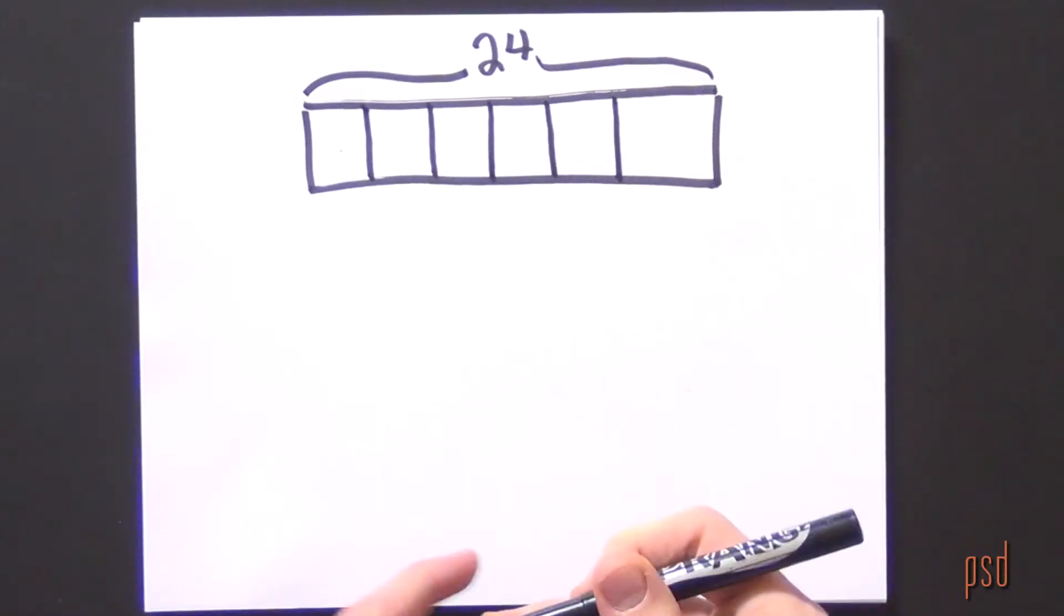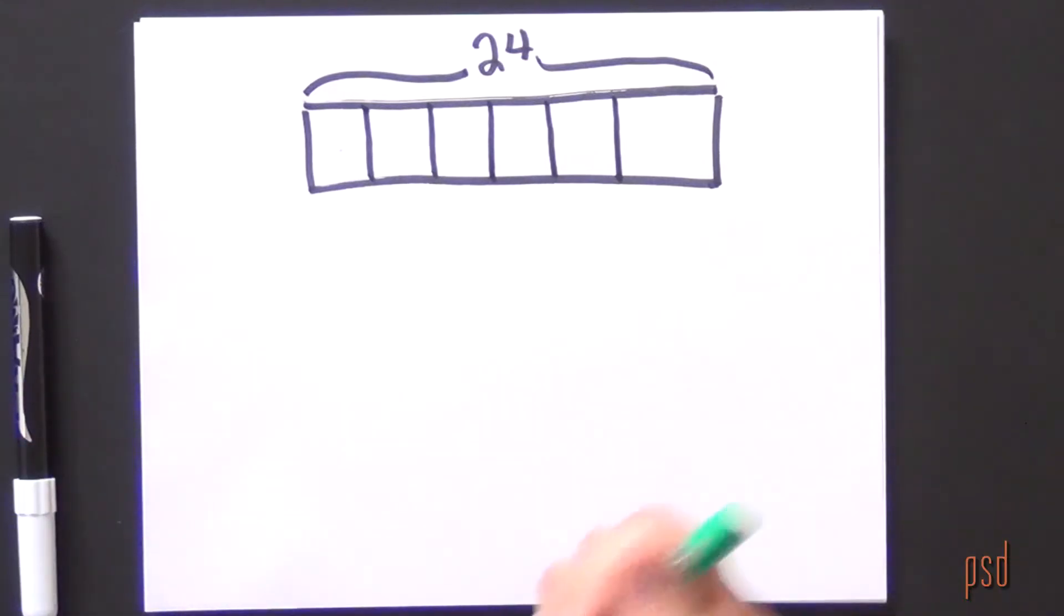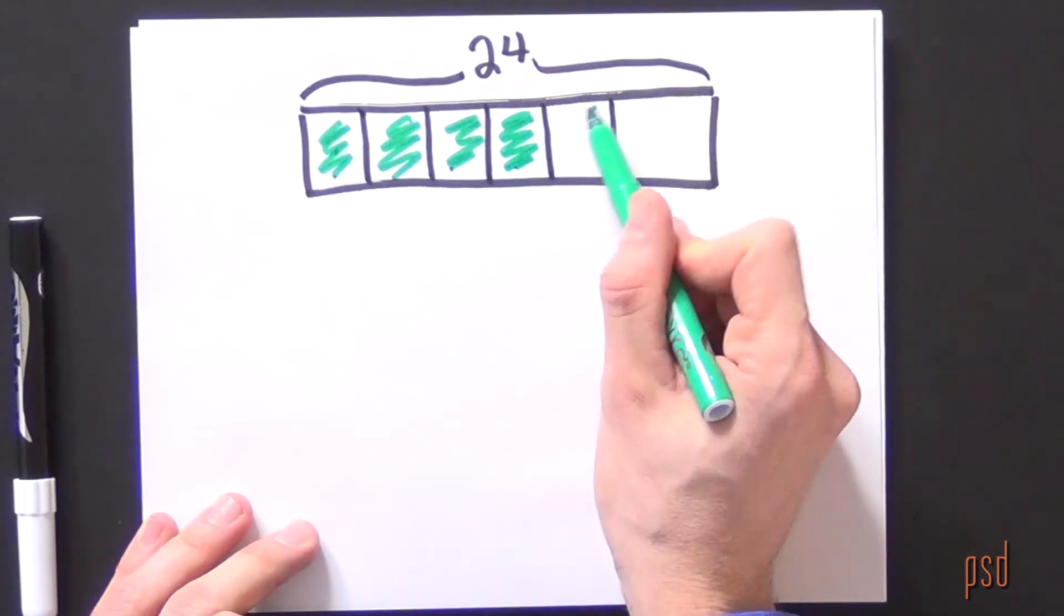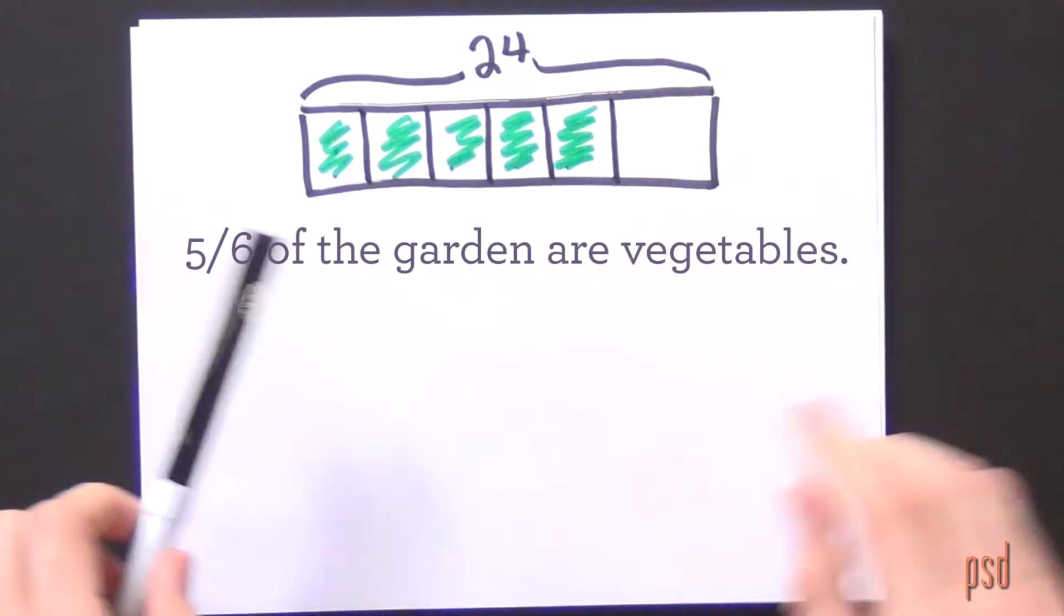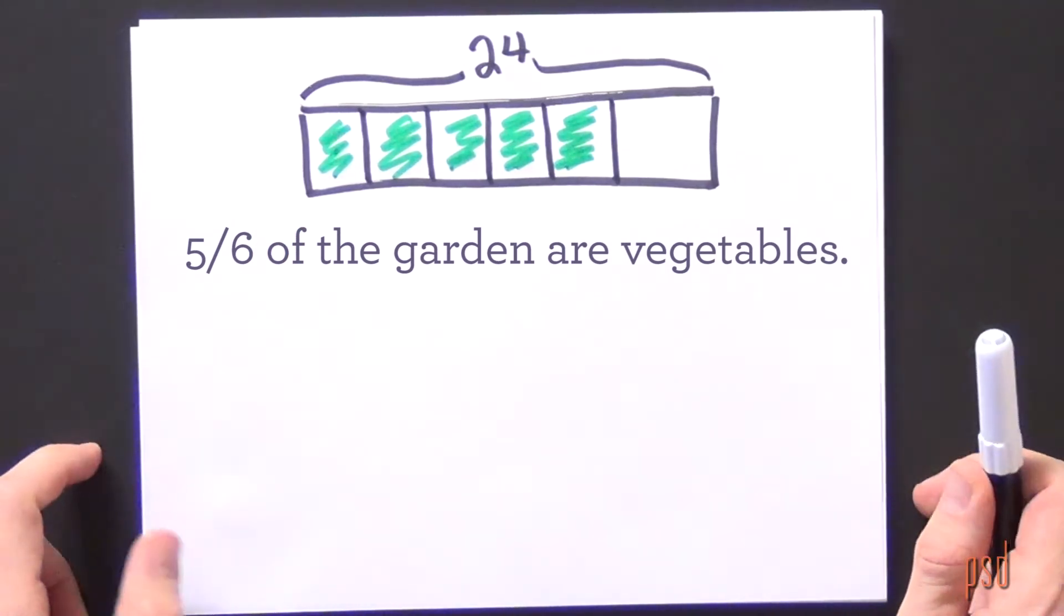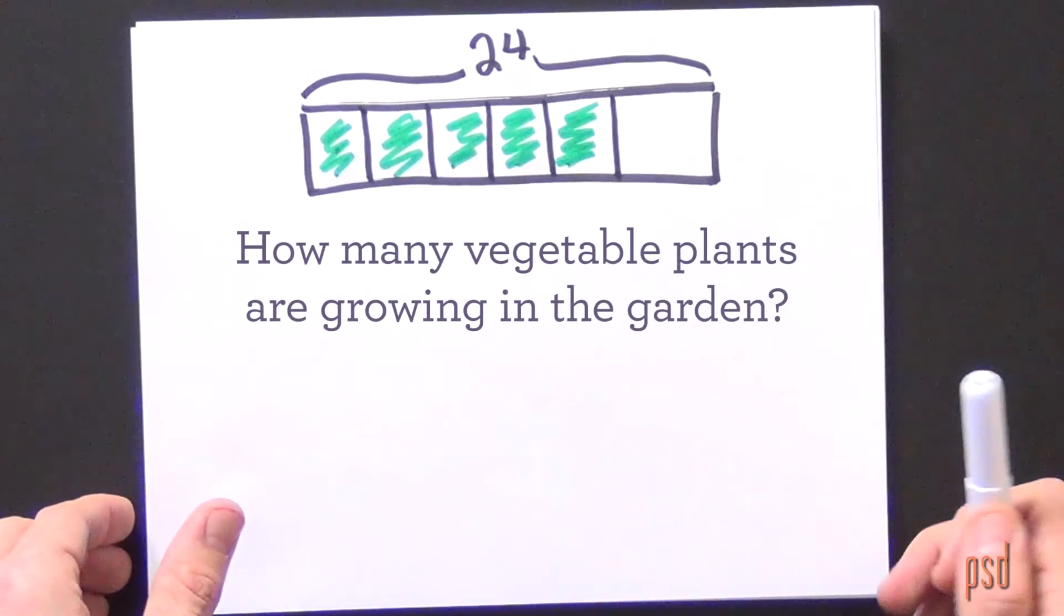I know that five-sixths of the garden is vegetables. I might even want to color this. Just because vegetables are green I chose green. This shows that five-sixths of the garden are vegetables. But it doesn't answer the question. The question asked how many vegetable plants are growing in the garden.